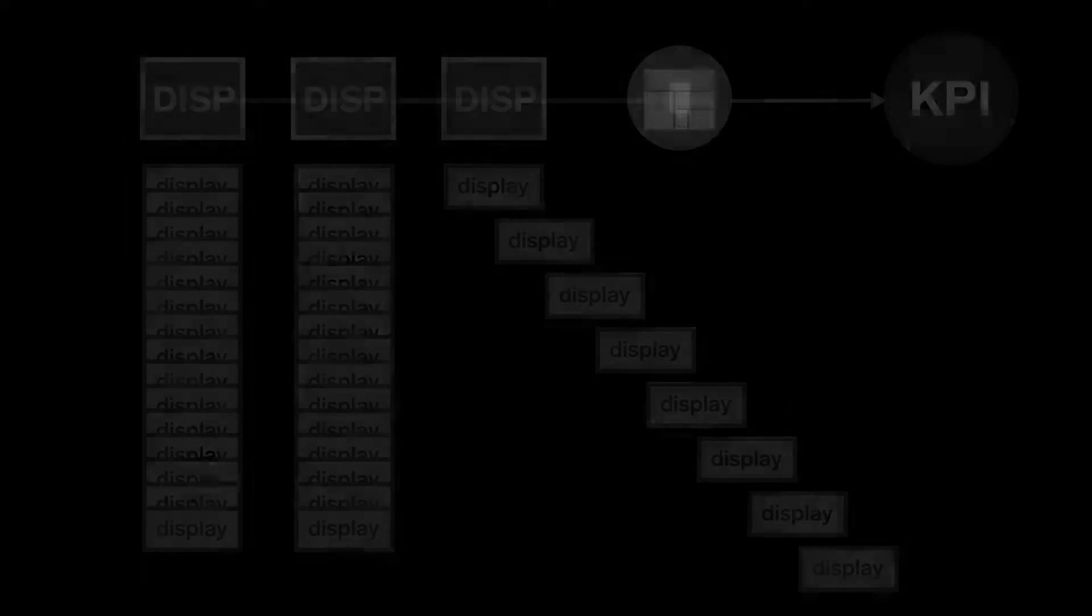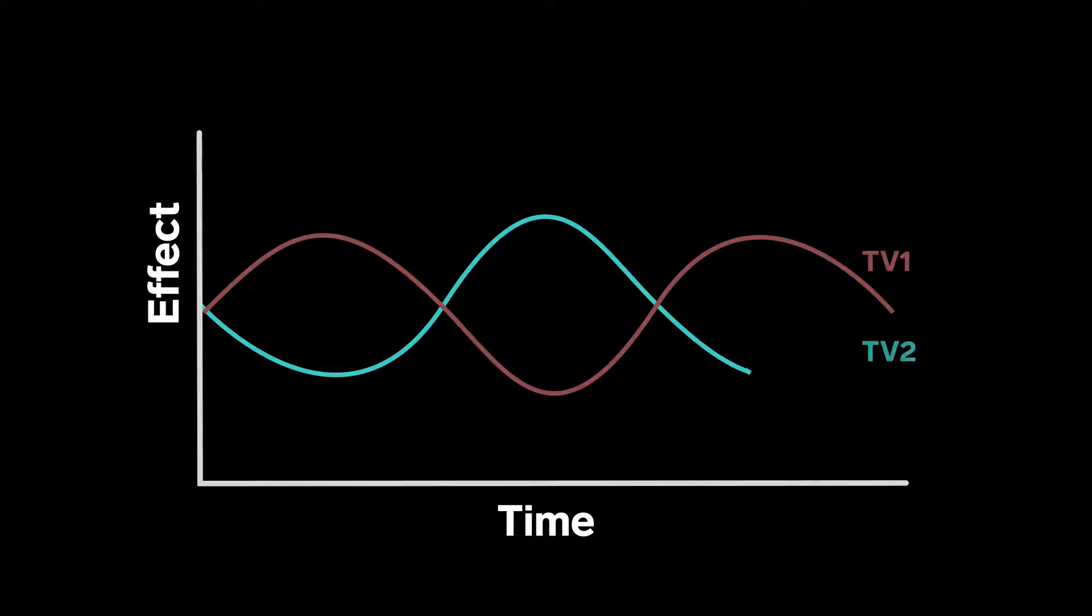To illustrate why granularity is so important, let's just take a look at two TV publishers. Here, we invest in advertising on TV1, which performs with these peaks and troughs throughout the day. We have then also invested in TV2, which performs in this way over the course of the day.